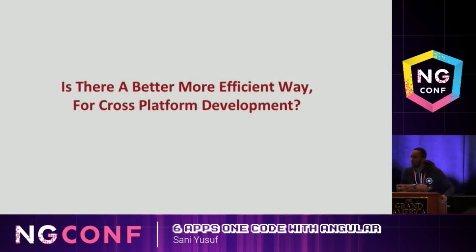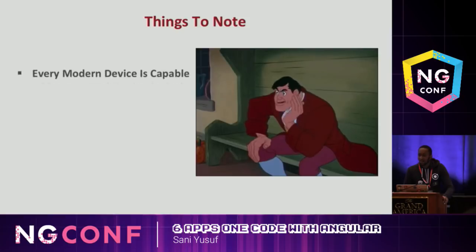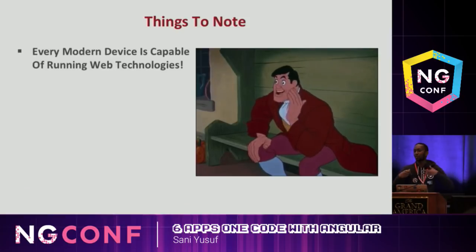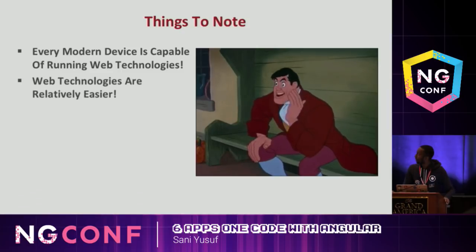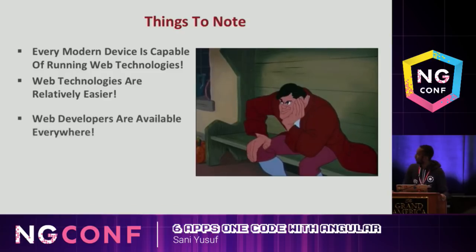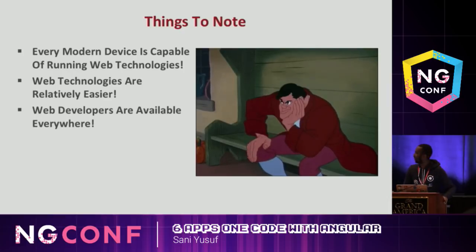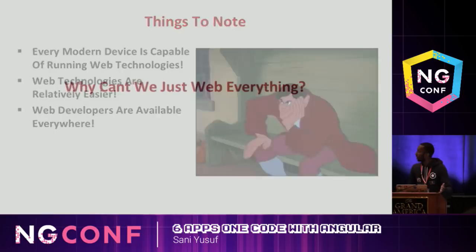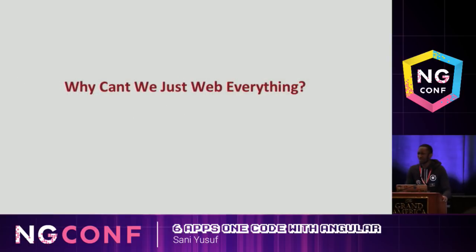So you start to think - when we're pushed to the wall, what do we do? We think. We innovate. Is there a better, more efficient way for cross-platform development? The first thing is every modern device today is capable of running web technologies. Web technologies are relatively easy to learn and use - I could teach you how to create an HTML web page in like a day, but you'll probably still be in 'public static main' in Java for a month. Web developers are everywhere. So why can't we just web everything? We can use the web everywhere.